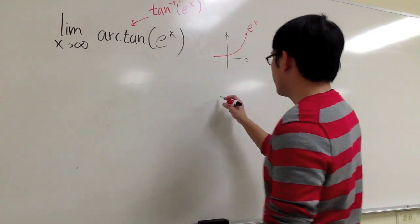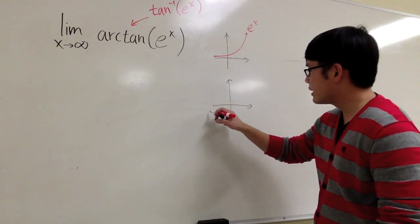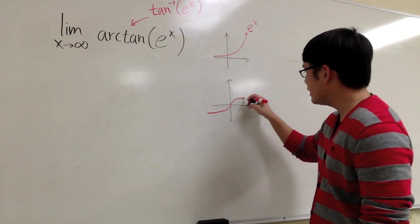And another graph that you have to look at is the arctangent. The arctangent goes like this. It's the inverse of tangent.